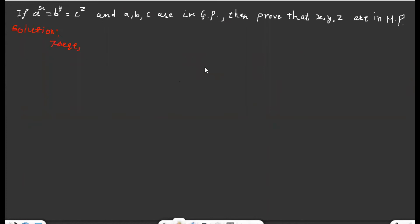My name is Abeer Jalani. Today I'm going to prove this problem: a to the power x equals b to the power y equals c to the power z, given a relation as well as a, b, c are in geometric progression, then we need to prove that x, y, z are in harmonic progression.